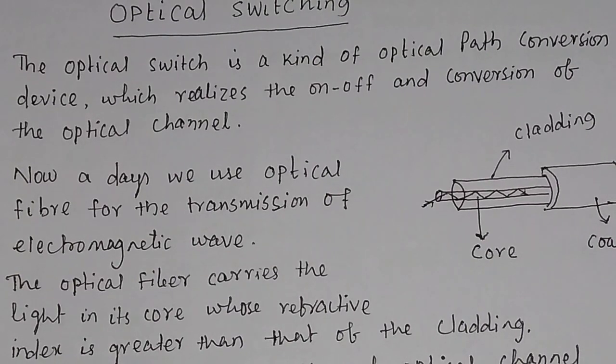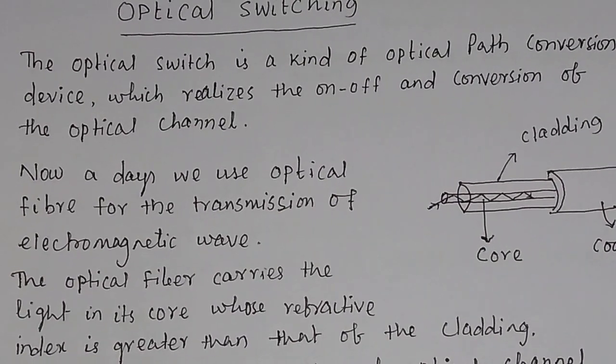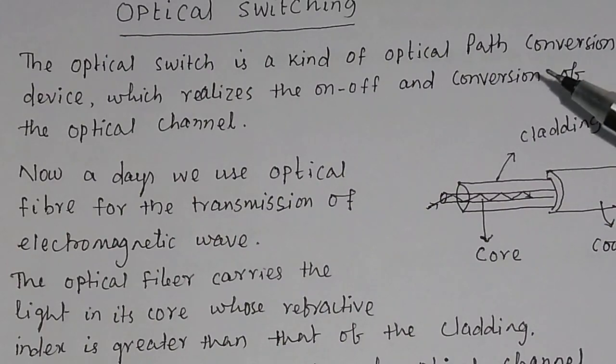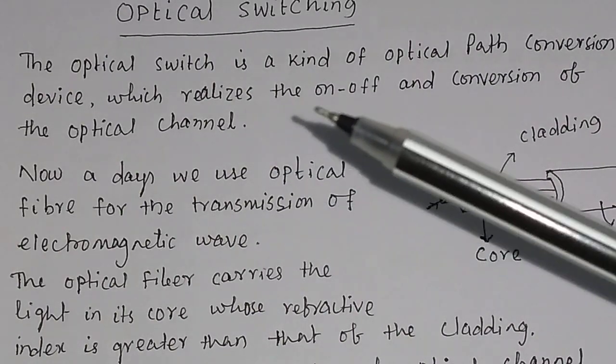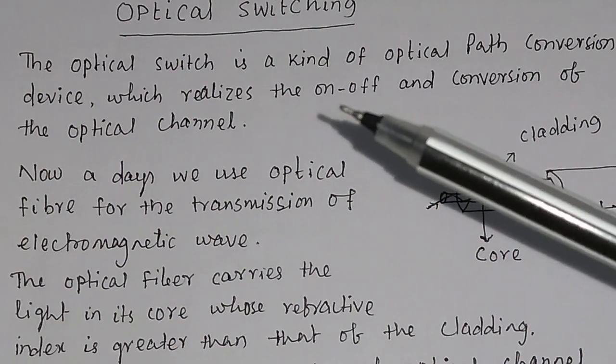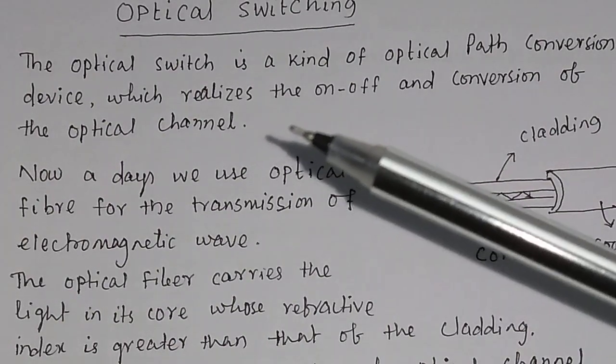Optical switching. What is optical switching? The optical switch is a kind of optical path conversion device, which realizes the on-off and conversion of the optical channel.